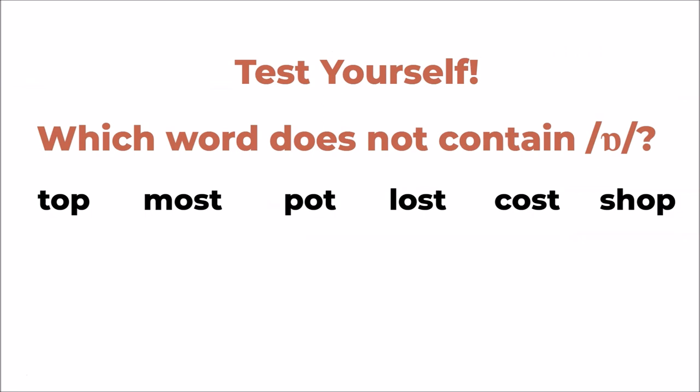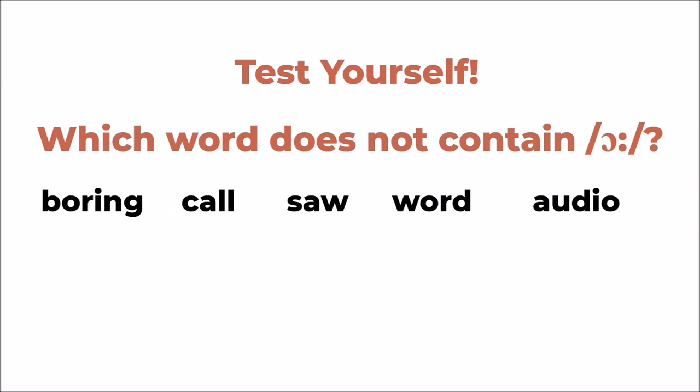Test yourself. Which word does not contain /ɒ/? Top, most, pot, lost, cost, shop. And the answer is most. Most has an /əʊ/ sound. This is a diphthong. So most is the right answer. All the other words have an /ɒ/ sound. And another test for our second sound. Which word does not contain /ɔː/?